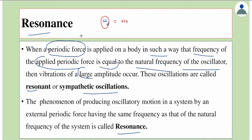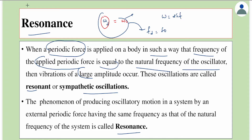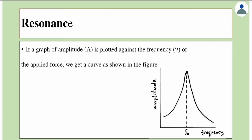The words 'frequency' and 'angular frequency' are used interchangeably here, because omega_naught actually means angular frequency. Since omega equals 2π times f, substituting gives f_d equal to f_naught. So the words are interchangeable, and this condition is called resonance.